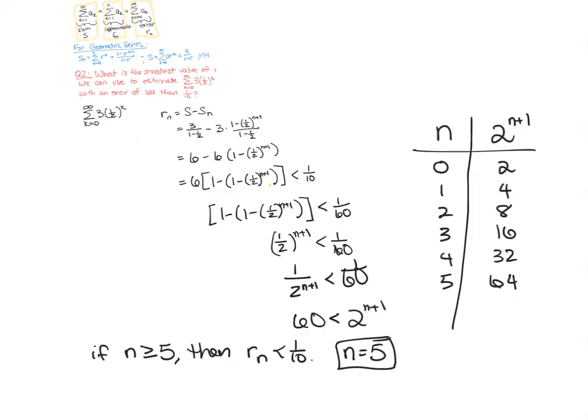This type of problem where you're trying to make sure your error is small enough is often what gets used in applied problems, because usually sometimes you know it's okay if I'm off by this much, but more than that and it's gonna mess everything up. And so then you want to approximate to within that value.